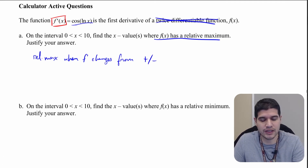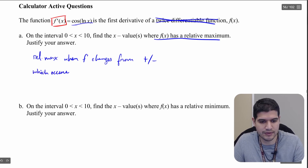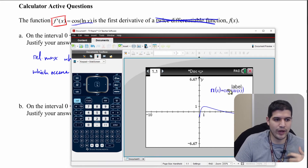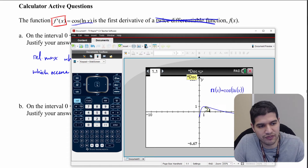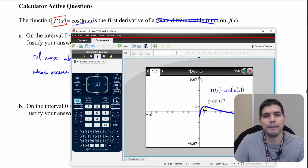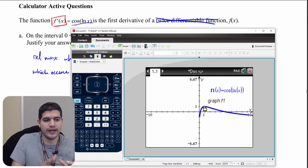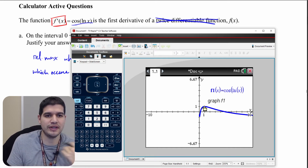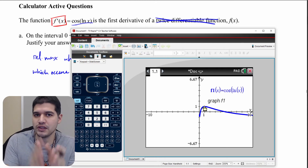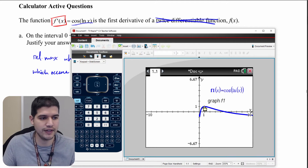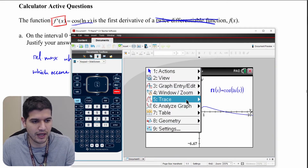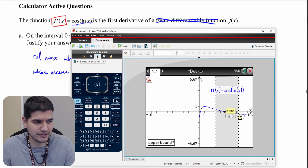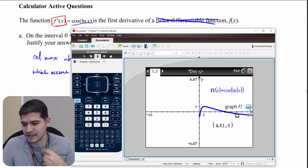Without even looking at the graph yet — I've already graphed it — when is this changing from positive to negative? I can see an x value where it's changing from negative to positive, and an x value where it's changing from positive to negative. I don't want to focus on the point close to one, because that's a maximum of f prime, not f. So I go to analyze graph and find the zero there, and I'm getting 4.8105.